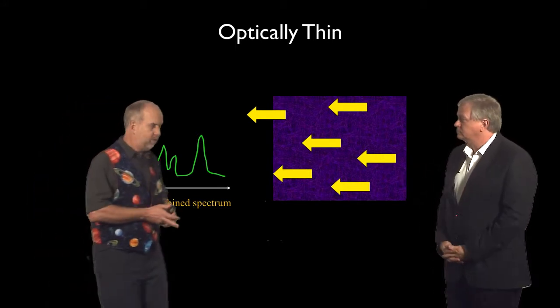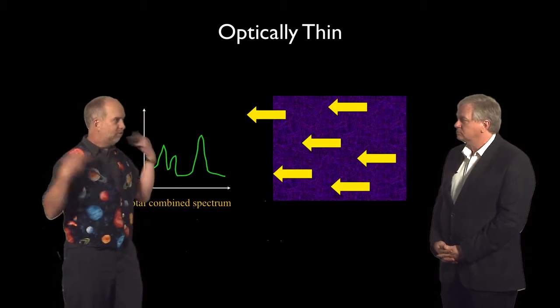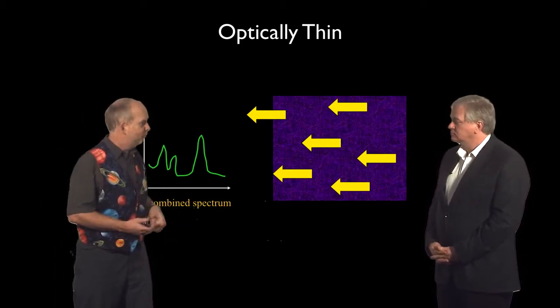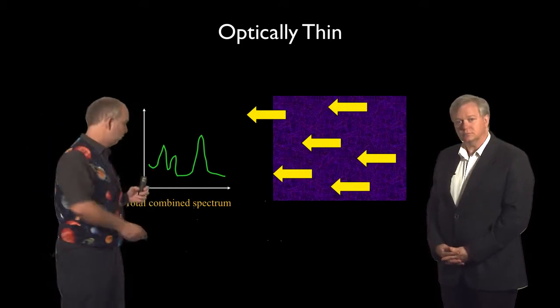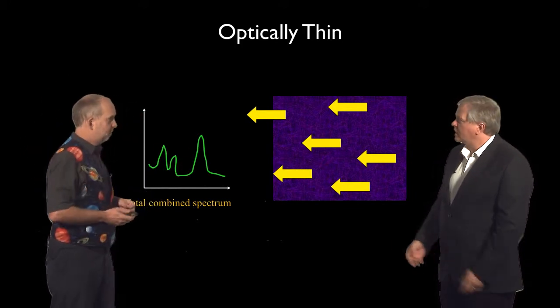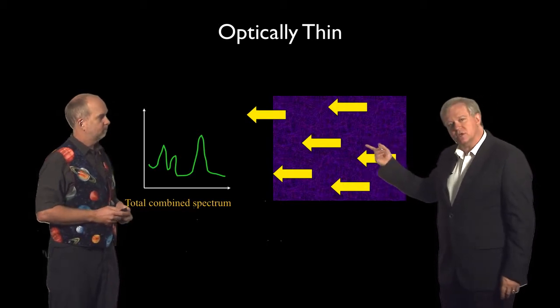If you ever get gas and you either zap it with ultraviolet or flood it through with particles like in a neon sign, or you heat it up, that will excite the electrons. As they jump back down the levels, they will produce a whole bunch of emission lines.